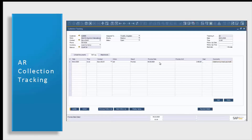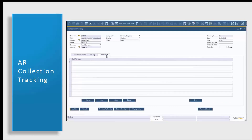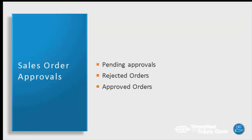Our third tab is for any attachments that you'd like to link to this collections tracking document. This can be anything that you'd like that you think would give anyone in your company a little bit of extra information. Now as soon as we're done entering in all of our information, we're simply going to press add to add our collection tracking document to the system.